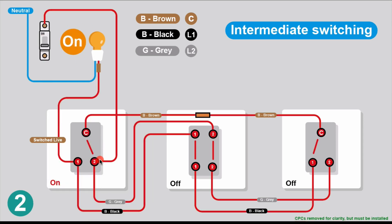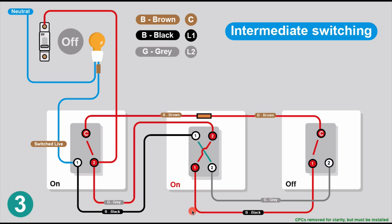We switch the first switch on. Following the power: it comes into the first switch, goes to the common, along through the intermediate, and all the way to the connection on the second two-way switch. Once this connection is energised, the light will be on. Going the other way through the circuit, there's no connection there - but it's being energised by the common. So the light is on.